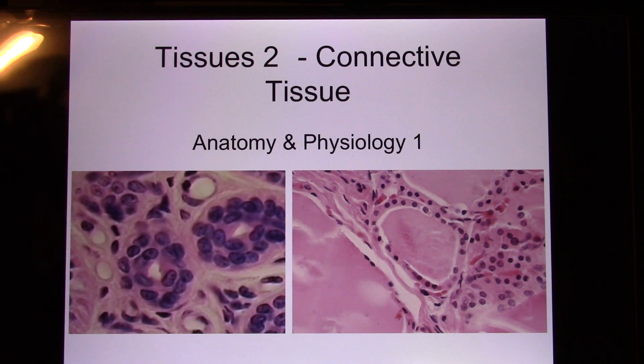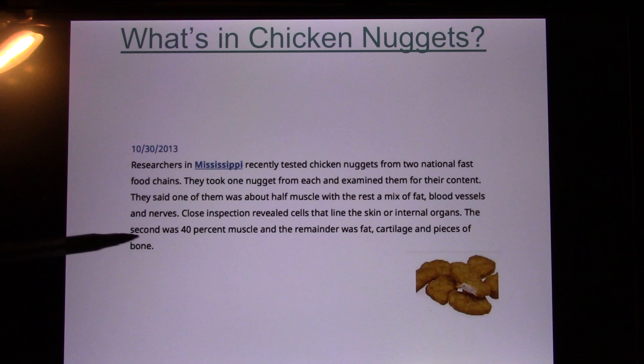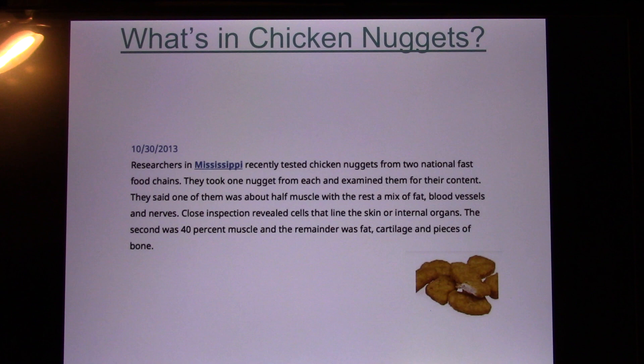We're in tissue 2, connective tissue. So connective tissue — we have a lot of connective tissue. That's the most abundant tissue you have in the body. You like chicken nuggets? You think it's chicken? No. The most abundant tissue in the body is actually connective tissue. They analyzed the chicken nugget and found it's only 40 percent muscle. The other 60 percent is connective tissue. So if they called it a connective tissue nugget, nobody would buy it — so they still call it a chicken nugget.